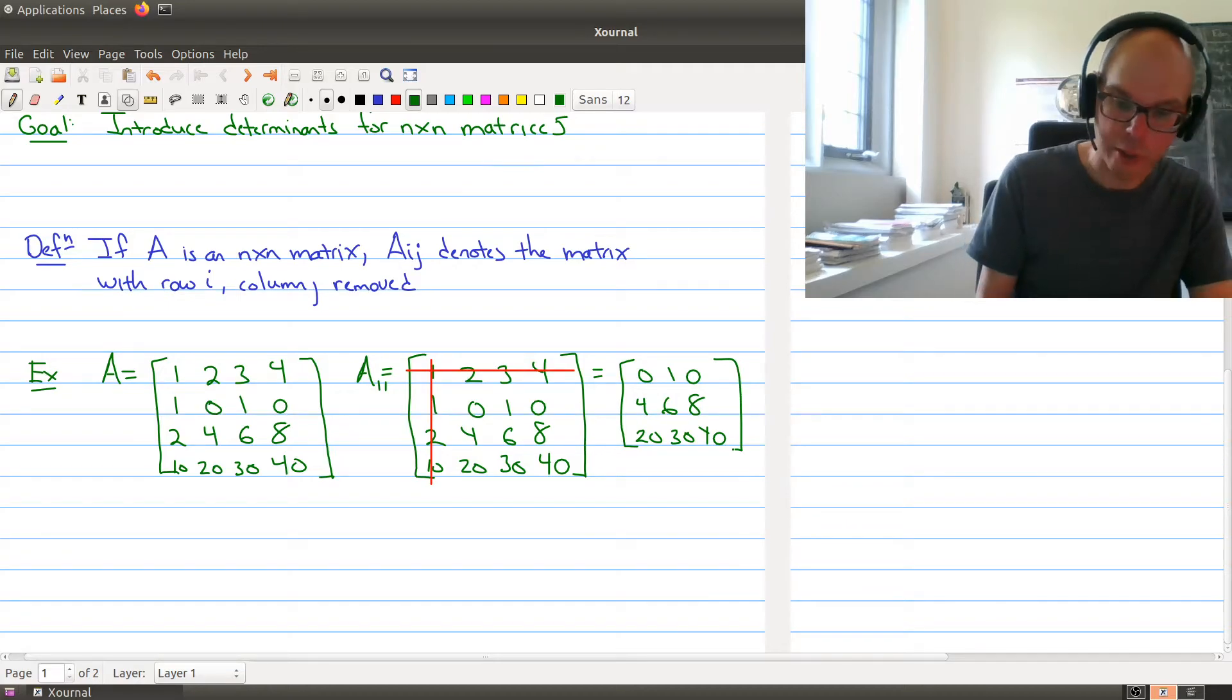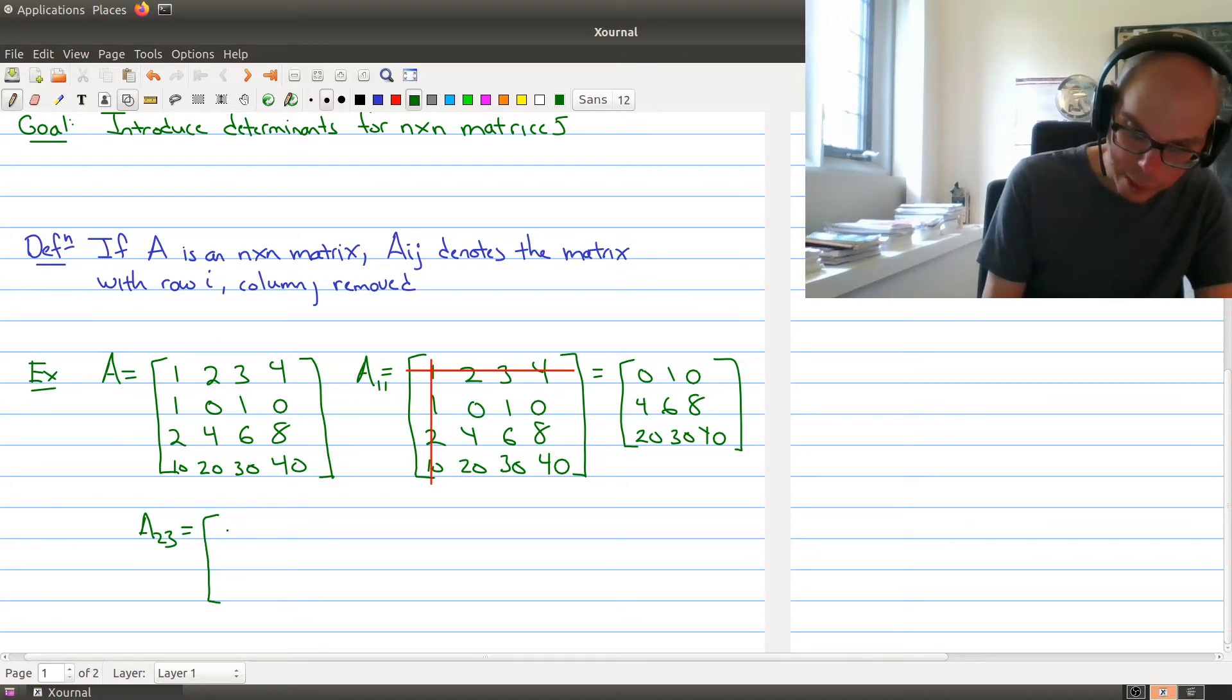And just to make sure that you're following along, here we're going to look at the matrix A 2, 3. So we're going to be removing the second row and the third column. And whatever's left over becomes the matrix we're interested in. So we have 1, 2, 4, 2, 4, 8, and 10, 20, and 40.